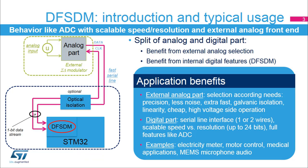The DF-SDM peripheral is a new digital peripheral inside the STM32 products. Its behavior is finally like a standard ADC with the analog part outside the microcontroller. The main benefit is to move the analog part outside the microcontroller and to propose an internal digital part with a wide range of features. The DF-SDM represents the digital part, which is connected to the analog part by a fast serial interface.